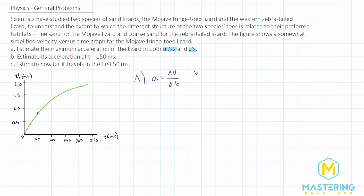Delta anything is always final minus initial, so we have v final minus v initial divided by t final minus t initial. So the final velocity, we can estimate it's basically like 0.89. We'll go with 0.8. So 0.8 meters per second minus the beginning, which is 0 meters per second.